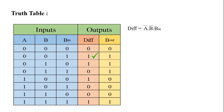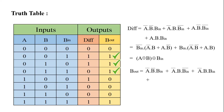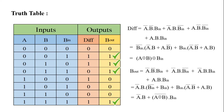So difference = A̅·B̅·B_in + A·B̅·B_in̅ + A·B·B_in, and after simplification we get A XOR B XOR B_in. Now B_out = A̅·B̅·B_in + A̅·B·B_in̅ + A̅·B·B_in + A·B·B_in, and after simplification we get A̅·B + (A XOR B)̅·B_in.